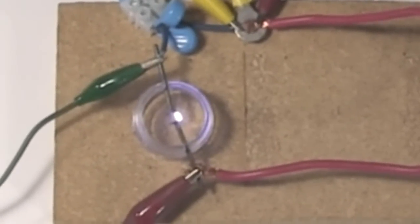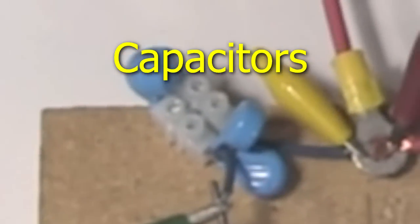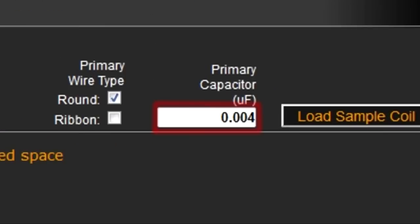And the last part is the primary circuit's capacitor, or capacitors in this case. From playing with the calculator, I know I need 0.004 microfarads, or 4 nanofarads, of capacitance. To get that, I'm using 4 of these ceramic capacitors, one nanofarad each and rated for 20,000 volts.